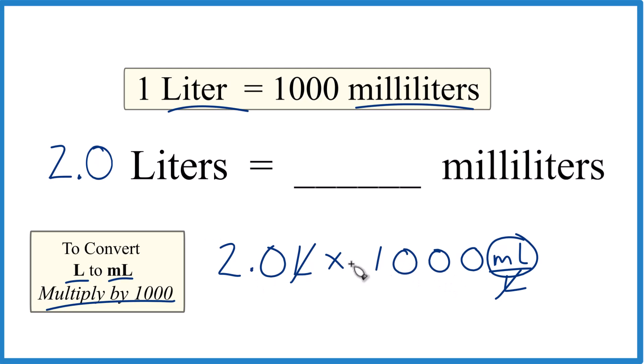So 2.0 or 2 times 1,000 is 2,000, and the units are milliliters. So in answer to our question, 2.0 liters is 2,000 milliliters.